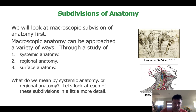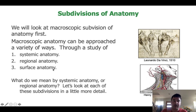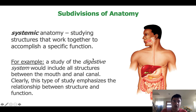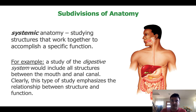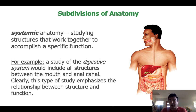When you think about subdivisions of macroscopic anatomy, they can be approached as systemic, regional, and surface anatomy. Systemic anatomy studies how structures work together to accomplish specific sets of functions. When you talk about the anatomy of the digestive system, you look at the oral cavity, esophagus, stomach, small intestines, and large intestines and how they fit and work together — that's systemic anatomy. You can also look at how those structures relate to other organ systems.